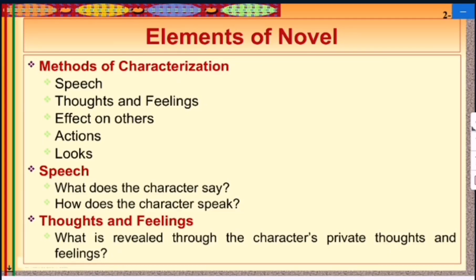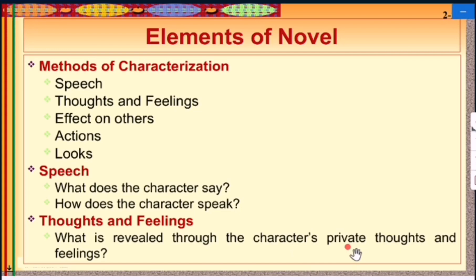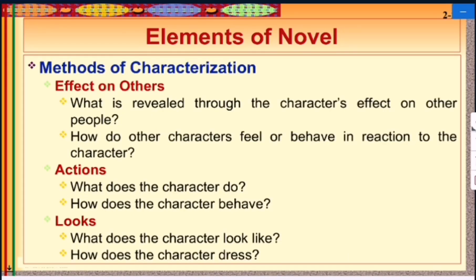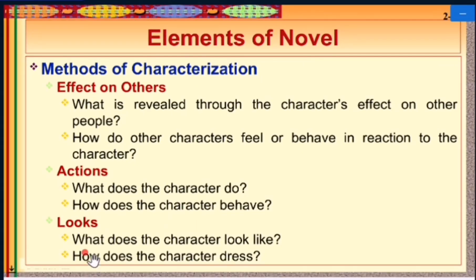The methods of characterization include: speech — what and how the character speaks; thoughts and feelings — what is revealed through the character's private thoughts; effects on others — how other characters feel or behave in reaction; actions — what the character does or how they behave; and look — what the character looks like and how they dress.